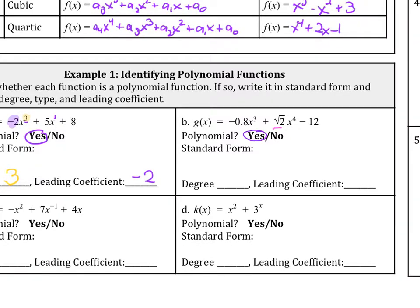So this is a polynomial. So this is yes. It is not in standard form because x to the 4th should be in the front. So this is square root of 2x to the 4th minus 0.8x cubed minus 12. So now it's in standard form.